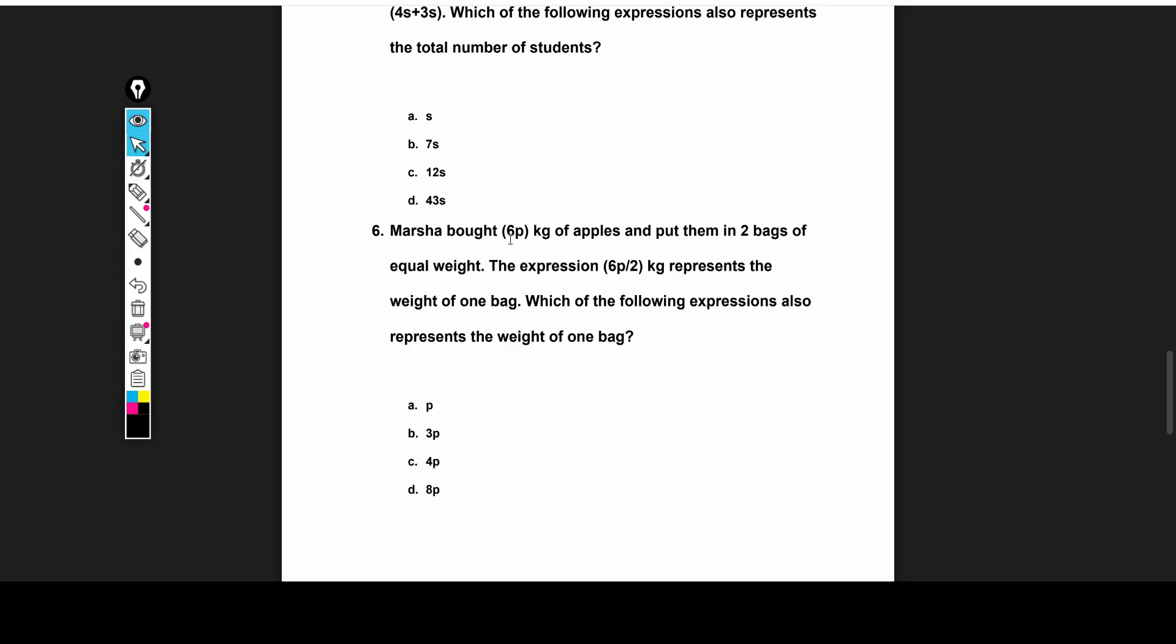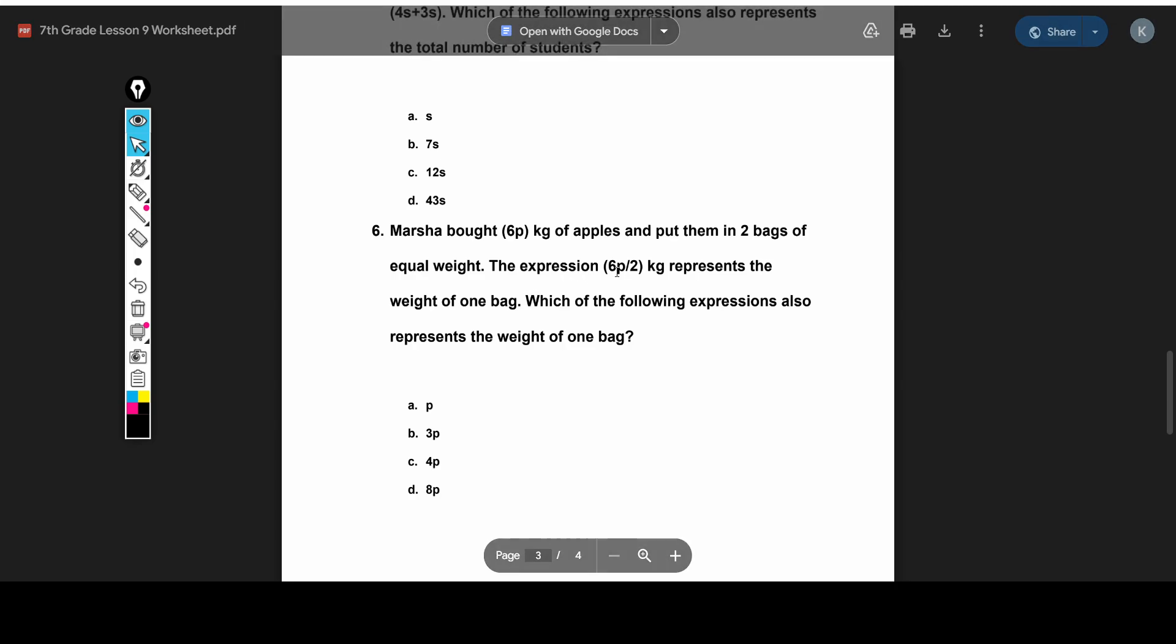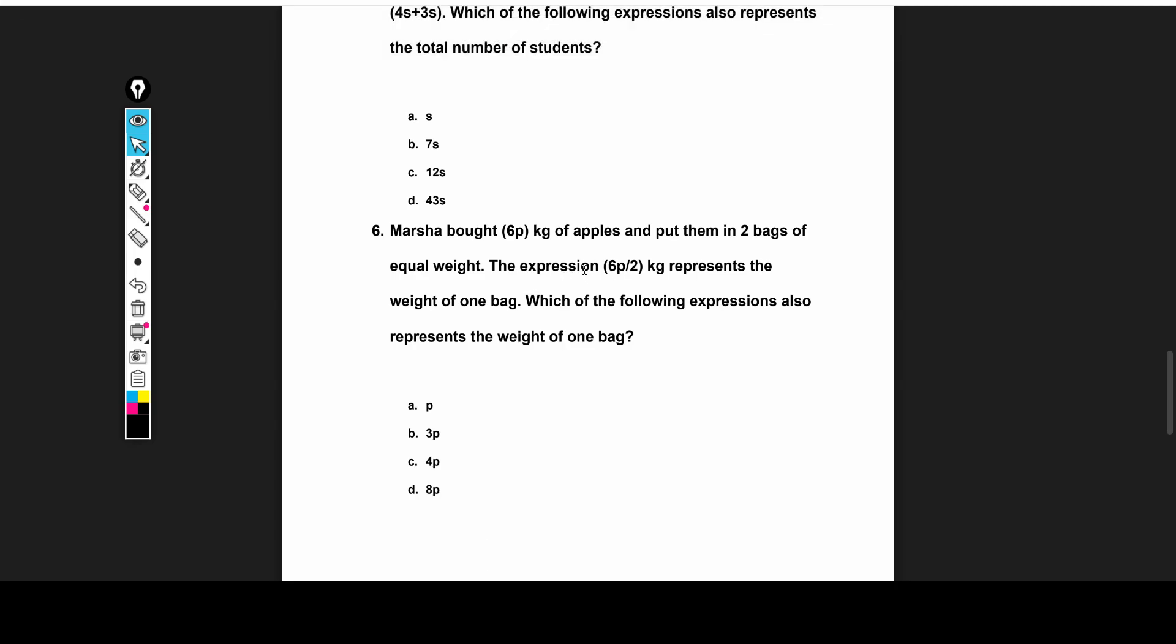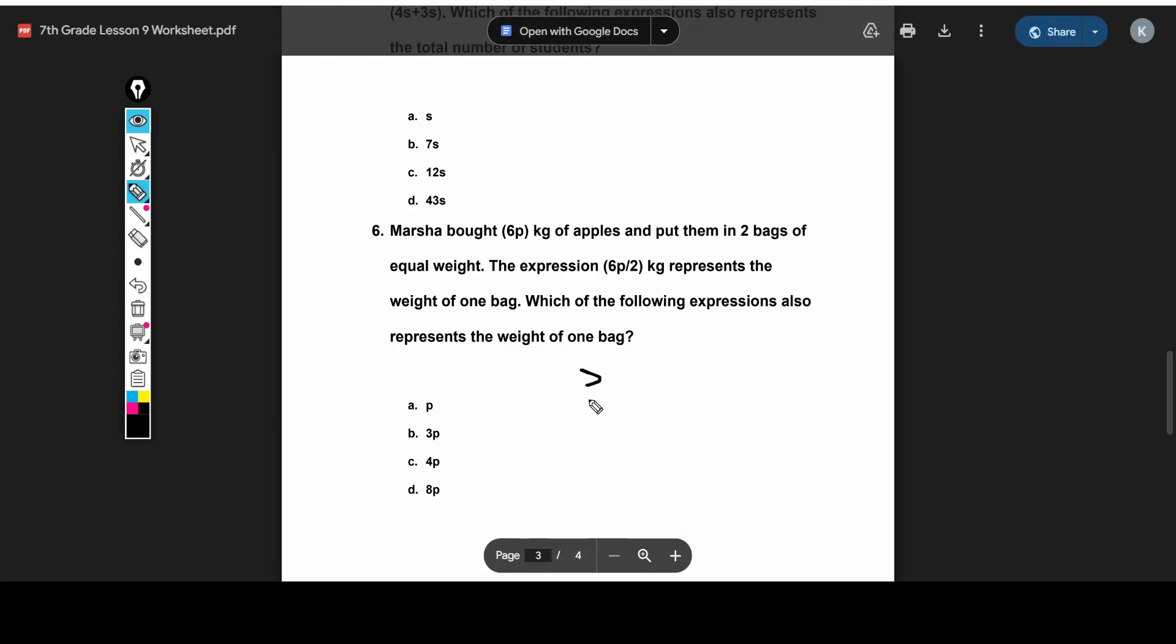Next, Marshall buys 6P kilograms of apples, and puts them in two bags of equal weight, which means that she divides them evenly. So this expression, 6P over 2 kilograms, is the weight of one bag. So what is another way to write that? Well, 6P over 2 is the same as 3P. Because 6 divided by 2 is 3. So we choose B.